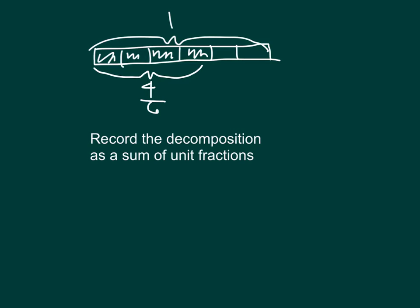Next we're asked to record the decomposition as a sum of unit fractions. So you've got four-sixths, which is really just one-sixth plus one-sixth plus one-sixth plus one-sixth added together. One-sixth plus one-sixth plus one-sixth plus one-sixth does equal four-sixths.